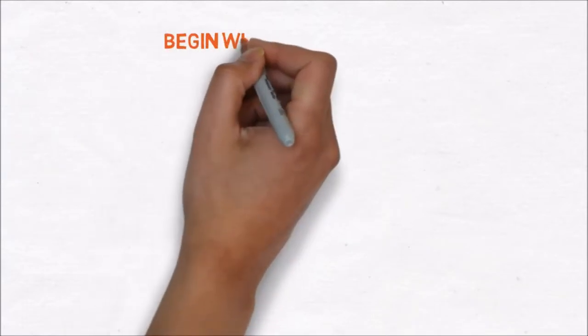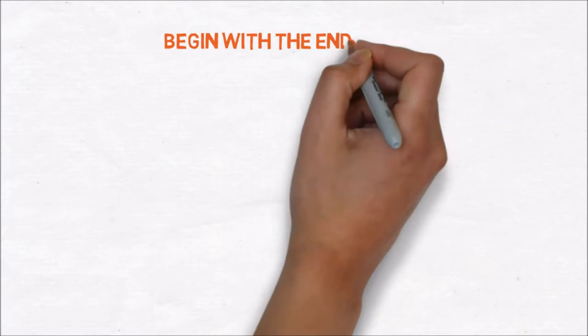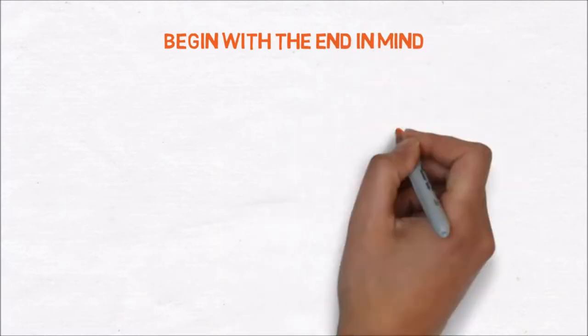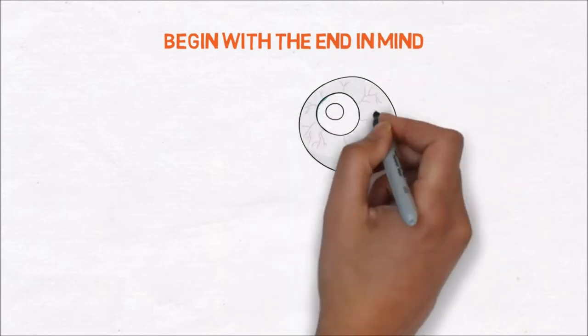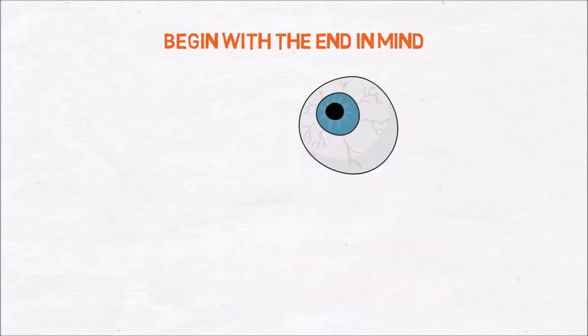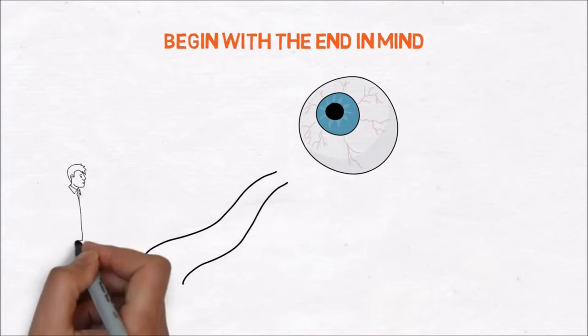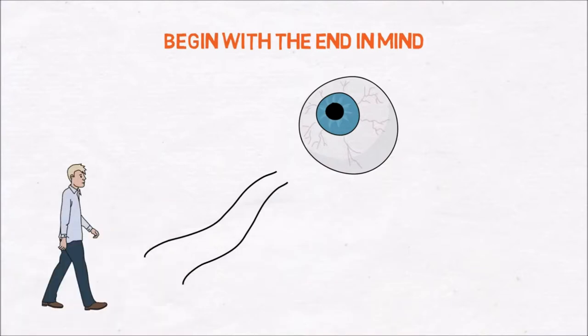The second lesson is to begin with the end in mind. Covey says we can use our imagination to develop a vision of what we want to become and use this to decide what values will guide us. In everything you do you have to start with a clear destination. By doing this you can make sure that the steps you are taking are in the right direction.